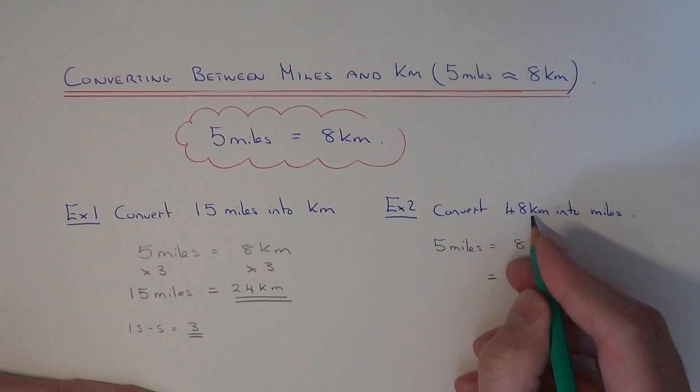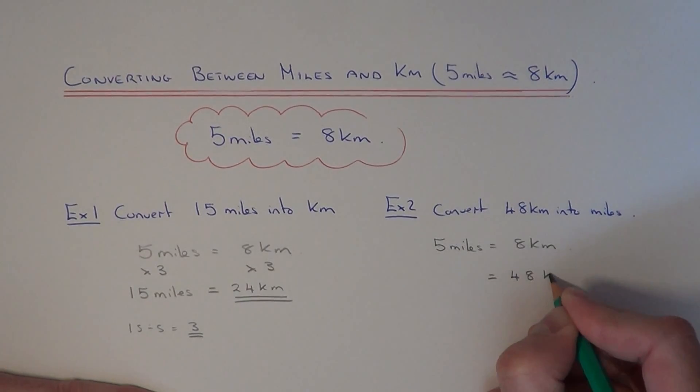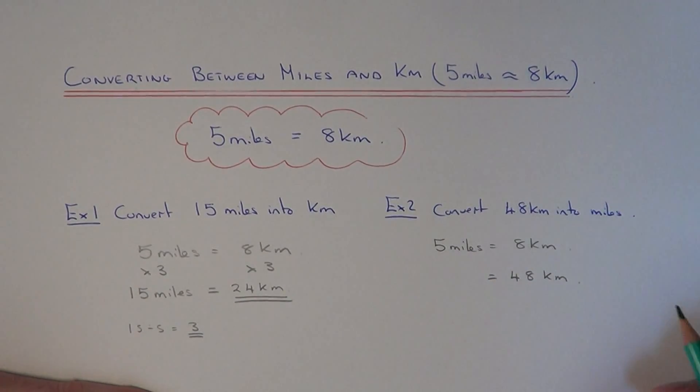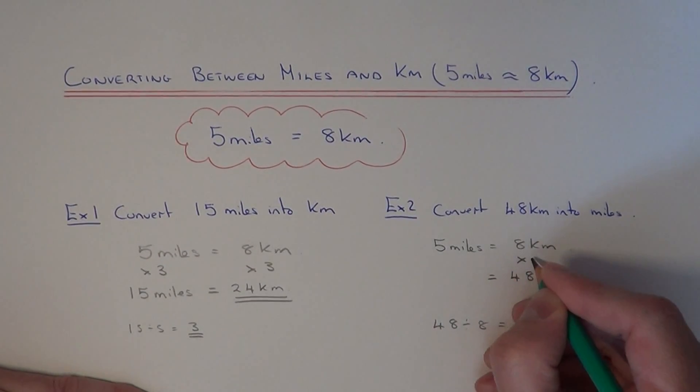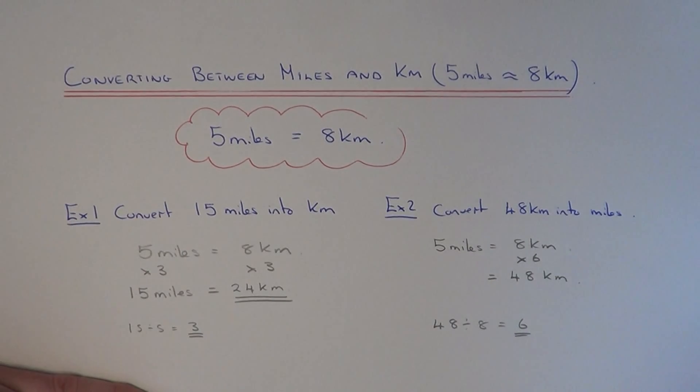This time we have the kilometers amount, so let's write this on the right-hand side. We need to figure out how many times bigger 48 is than 8. You do this by doing 48 divided by 8, which is 6. So 48 is 6 times bigger than 8.